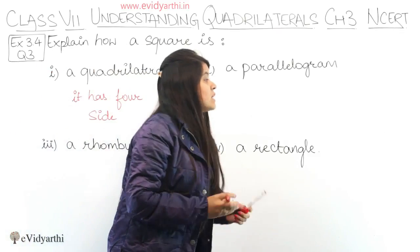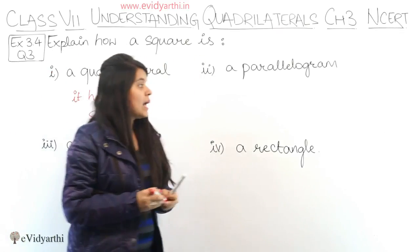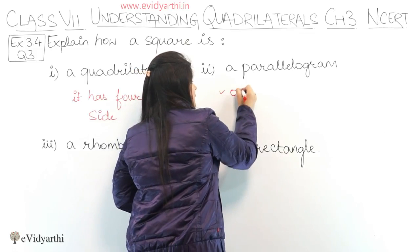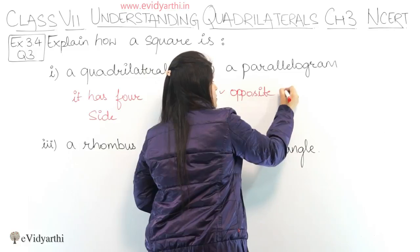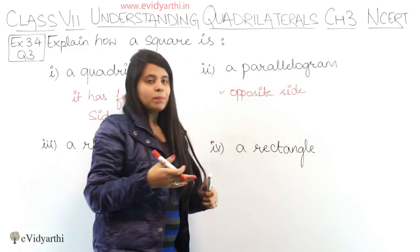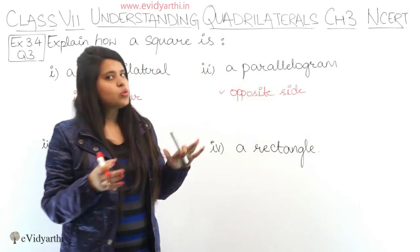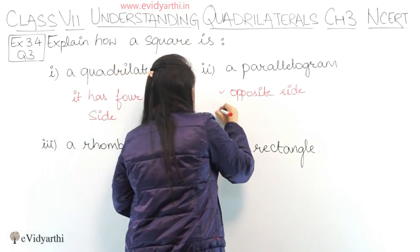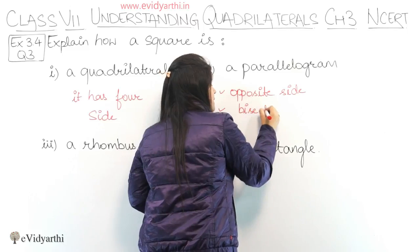Next we have why a square can be a parallelogram. Because opposite sides are equal. Square की opposite sides equal होती हैं, and we know that all sides are equal. Comparing with a parallelogram, its opposite sides are also equal, and both diagonals bisect each other.